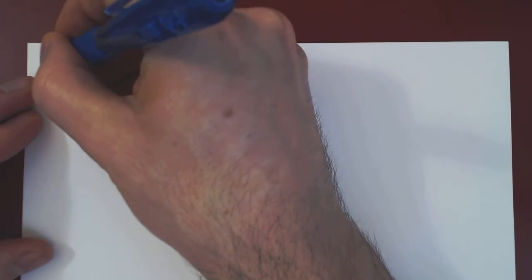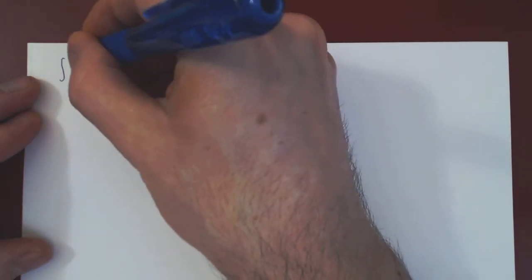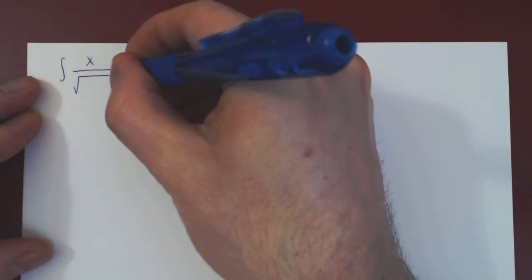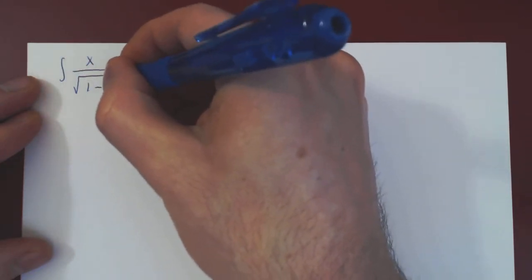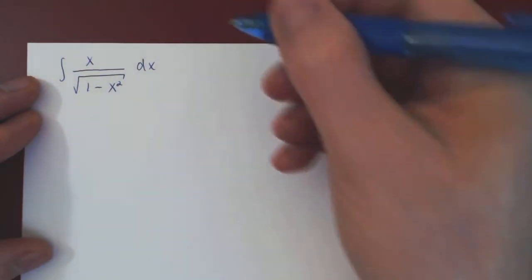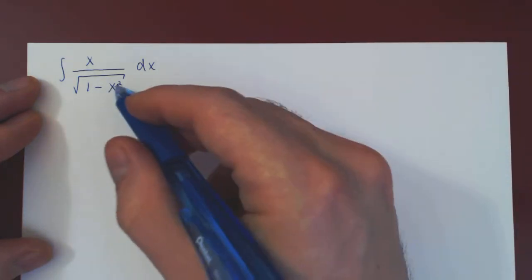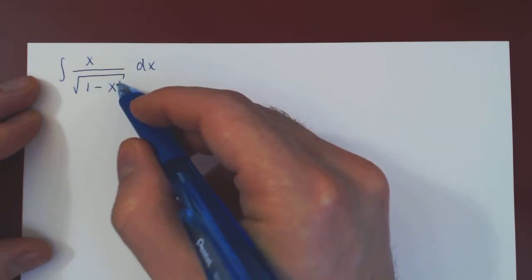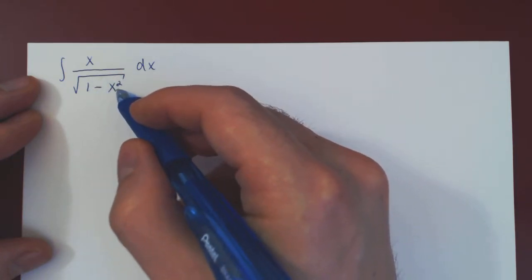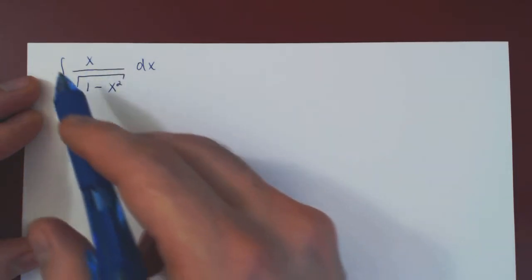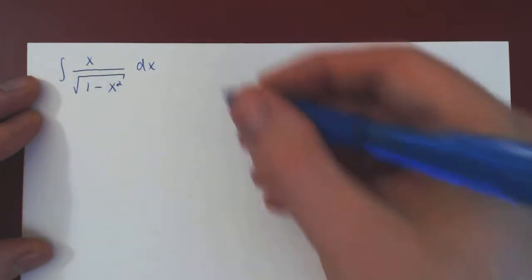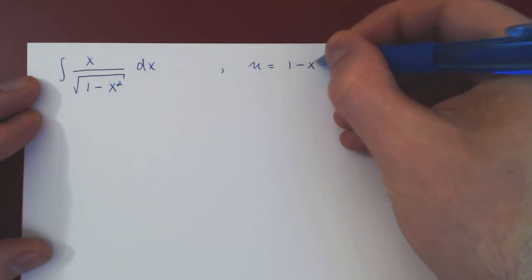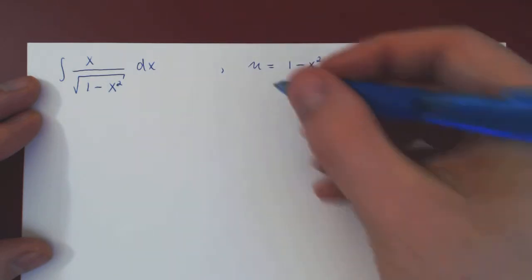Suppose we have the following integral: x over the square root of 1 minus x squared, dx. If you look at this integral, it's a fairly simple integral — if you differentiate 1 minus x squared, you get negative 2x, which up to a factor of negative 2 is simply x. So you can solve this integral using a simple u substitution, letting u be 1 minus x squared. Take the differential on both sides.